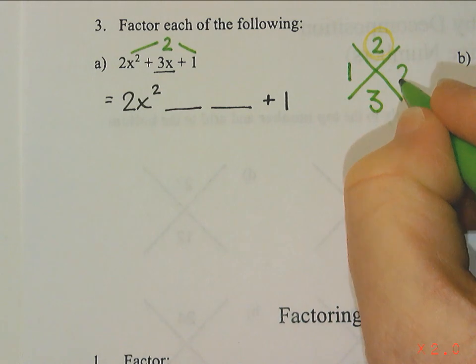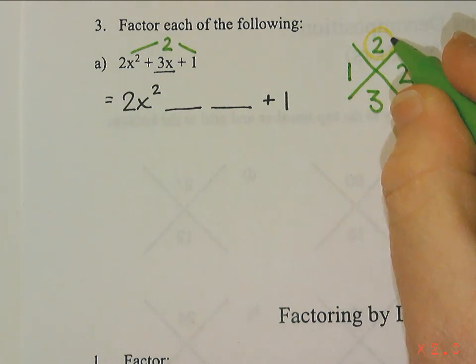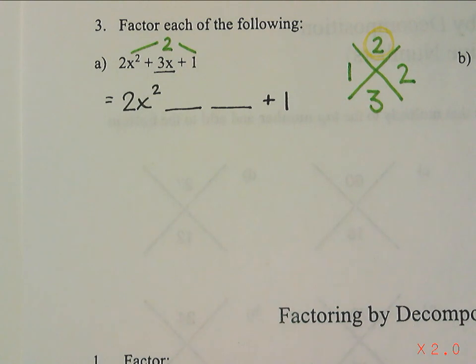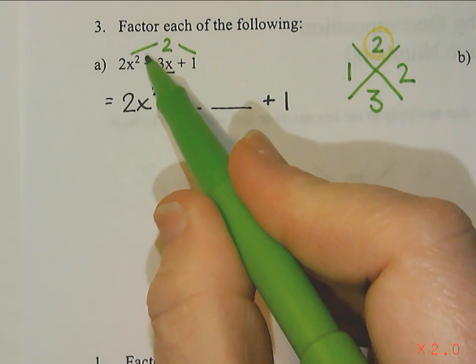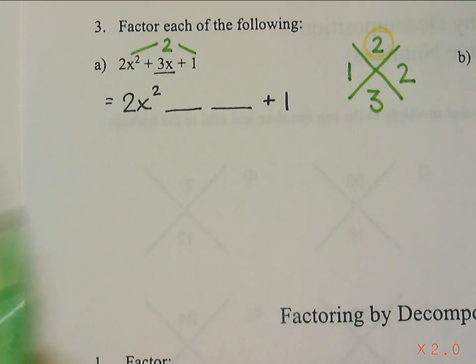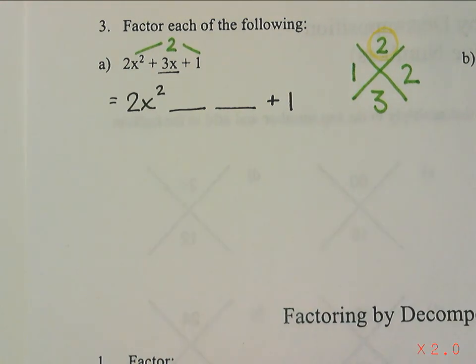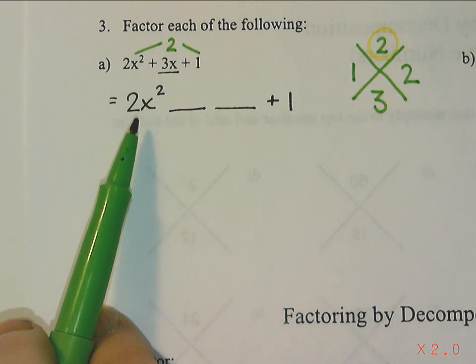So I think we found those numbers pretty quickly. We're going to use 1 and 2. 1 times 2 is 2, 1 plus 2 is 3. What that means is that the two like terms that I added together to get 3x were 1x and 2x.